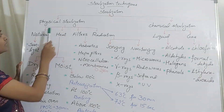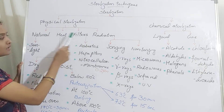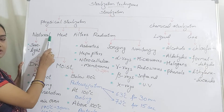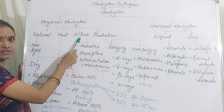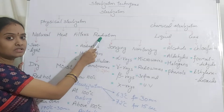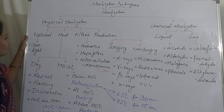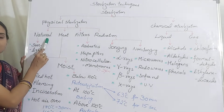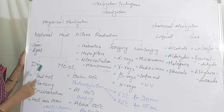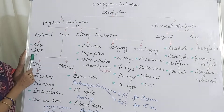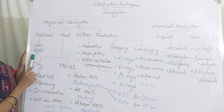Physical sterilization is again classified into four types: natural sterilization, heat sterilization, sterilization using filters, and sterilization using radiation. Natural sterilization process is making use of natural resources for the substance.